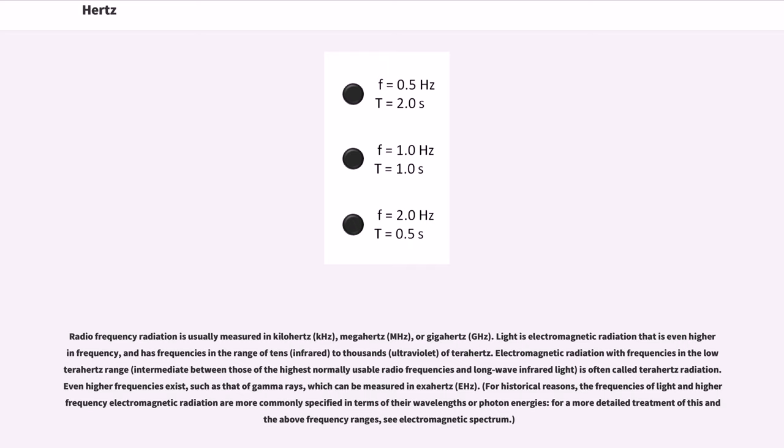Light is electromagnetic radiation that is even higher in frequency, and has frequencies in the range of tens (infrared) to thousands (ultraviolet) of terahertz. Electromagnetic radiation with frequencies in the low terahertz range, intermediate between those of the highest normally usable radio frequencies and long-wave infrared light, is often called terahertz radiation.